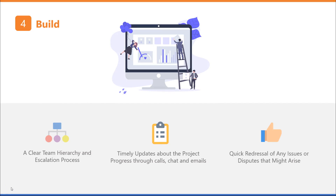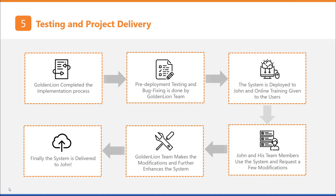During the entire process, the development team worked closely with John to build the best possible system for his business. Through regular calls and emails, the GoldenLand team collected further details of his business process, industry terms, and user profiles, and created the necessary components to make the system fit John's business. John received clear team hierarchy and escalation processes, timely project updates, and quick resolution of any issues. Once development was complete, extensive testing was carried out. When all bugs were fixed, the system was deployed and users were trained. John and his team started using the system, suggested some small changes, and GoldenLand made those updates until John was fully live with the new system.